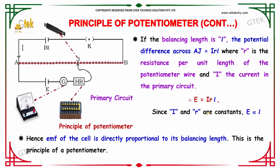Where I and R are constants, so E is directly proportional to the length. Hence, EMF of the cell is directly proportional to the balancing length. This is the principle of potentiometer.